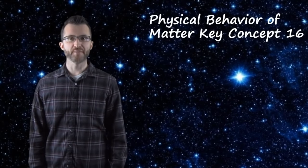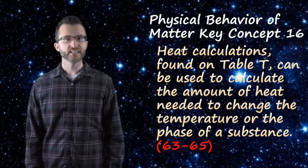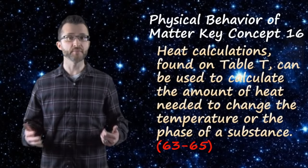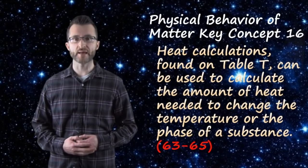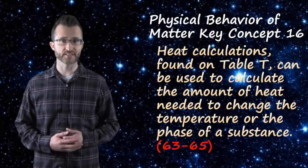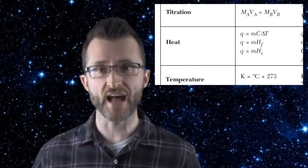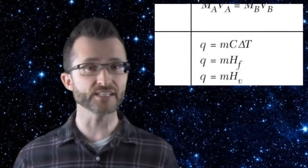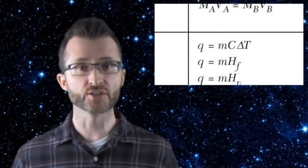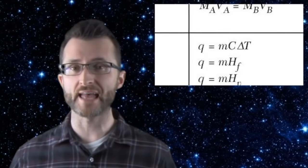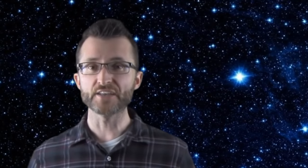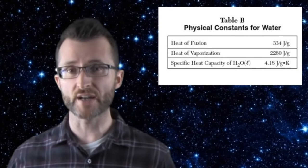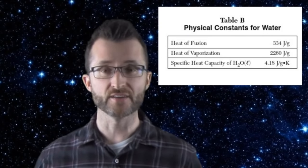Physical behavior of matter, key concept sixteen. Heat calculations, found on table T, can be used to calculate the amount of heat needed to change the temperature or the phase of a substance. If you have to find the value for the amount of heat absorbed or released, and you see that there's a temperature change, you're going to use the formula Q equals MC delta T. If you need the value for the specific heat, and the substance is water, you're going to go to table B for that constant.